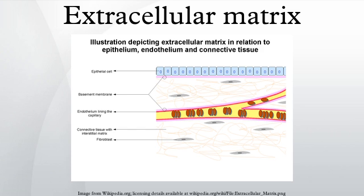GAGs are carbohydrate polymers and are usually attached to extracellular matrix proteins to form proteoglycans. Proteoglycans have a net negative charge that attracts positively charged sodium ions, which attracts water molecules via osmosis, keeping the ECM and resident cells hydrated. Proteoglycans may also help to trap and store growth factors within the ECM.